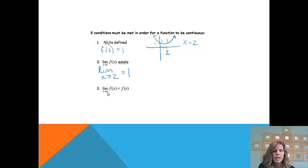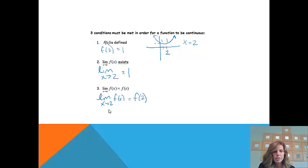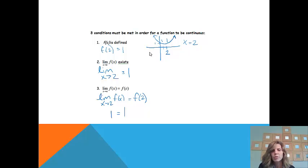Condition 3: the limit as x approaches c should equal f of c. In our case, the limit as x approaches 2 should equal f of 2. We found the limit equals 1, and we already found f of 2 equals 1. Those two equal each other, so the third condition is met. This confirms mathematically what we can already tell visually — tracing from left to right, we don't need to pick up our pencil.